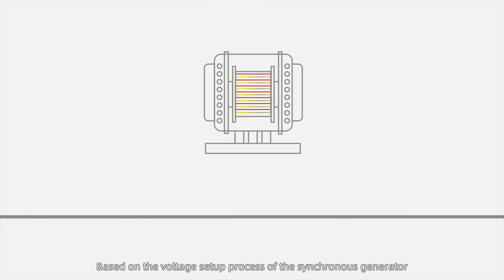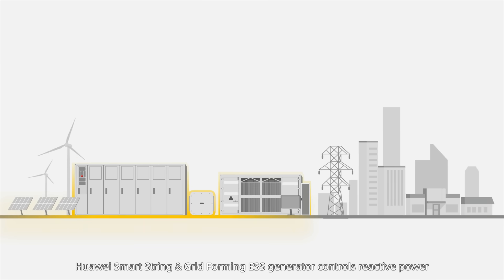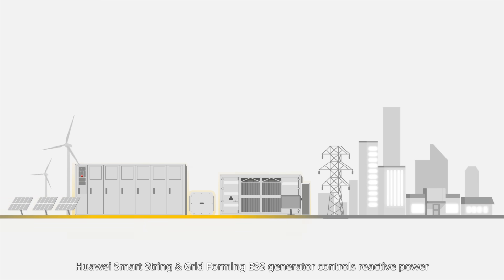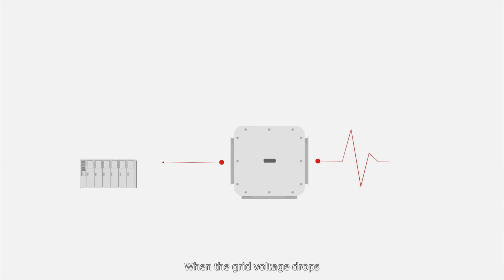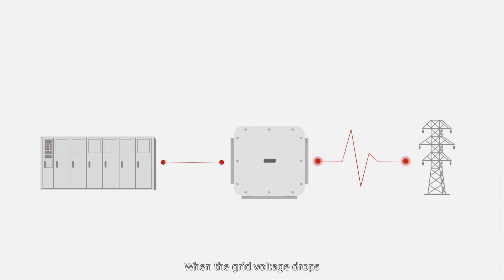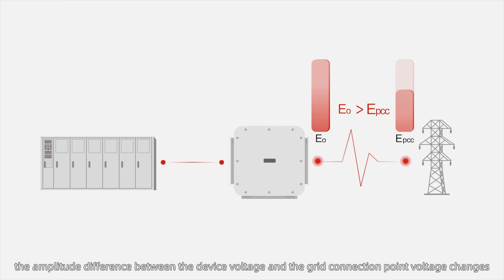Based on the voltage setup process of the synchronous generator, Huawei SmartString and Gridforming ESS controls reactive power by adjusting the internal potential. When the grid voltage drops, the amplitude difference between the device voltage and the grid connection point voltage changes.